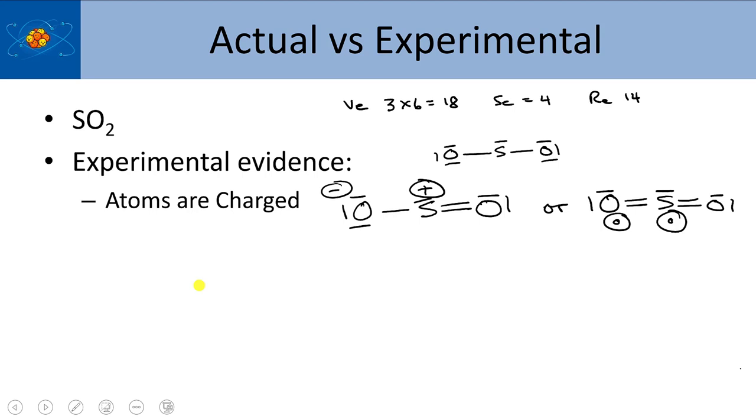So this is what you should have come up with. Two possible structures. And the valence electrons were 18. The skeletal electrons, they were 4. And then the remaining electrons were 14. So that meant 7 pairs. So 1, 2, 3, 4, 5, 6, 7. And again, when you're doing these kinds of things, you should check to make sure that the total electrons is still 18. And it is in the structure. Well, what you find is the sulfur doesn't have an octet. So to satisfy the octet, one of the oxygens needs to donate a pair of electrons to the sulfur. And you end up with this structure.